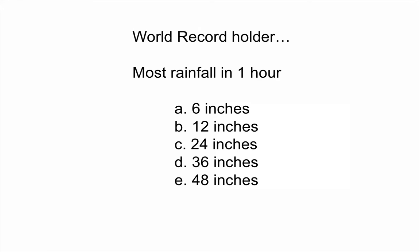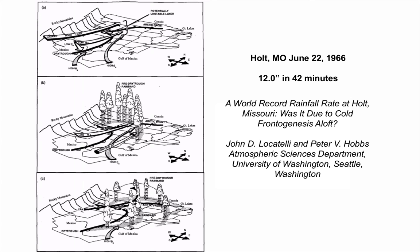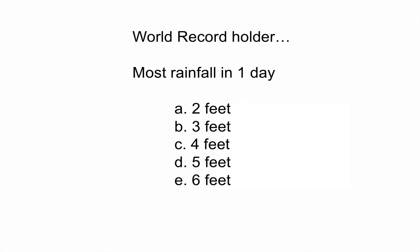What do you think the world record holder is for the most rainfall in one hour? 6, 12, 24, 36, or 48 inches? It turns out the answer is 12 inches, but it actually fell in 42 minutes. Holt, Missouri, 1966. One stationary thunderstorm, 12 inches of rain, continually fed with Gulf of Mexico moisture. That is an incredible amount of rain.